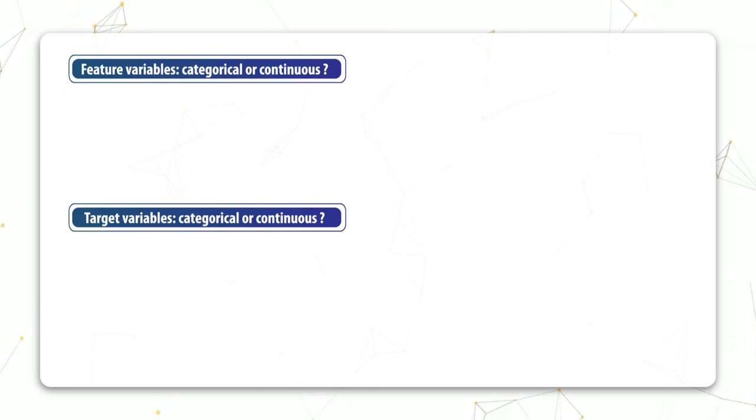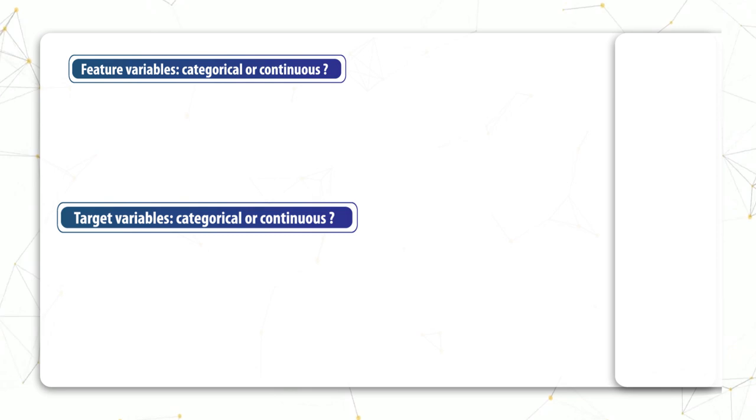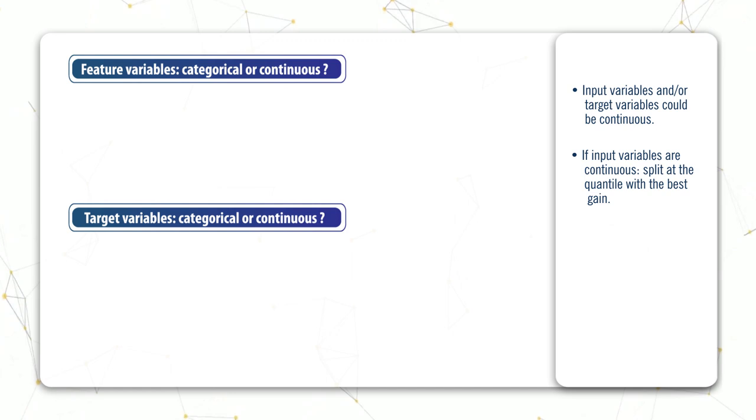Well, there are two different types of variables that could become continuous. It could be either the features, also known as the independent variables, or else it could be the target variable, also known as the dependent variable. So you could have a case where only the features are continuous, or only the target variable is continuous, or both are continuous, or neither are continuous, which is the example we've already looked at.